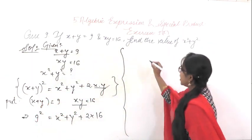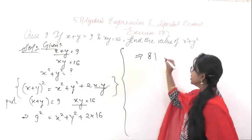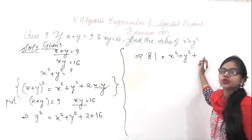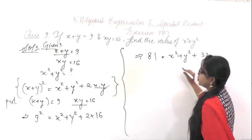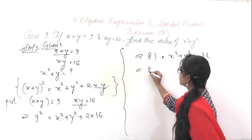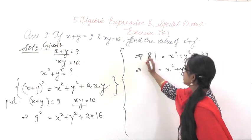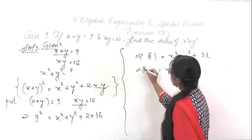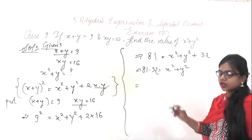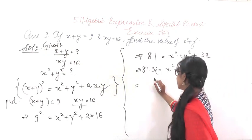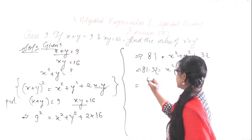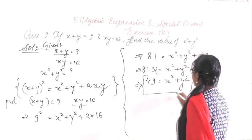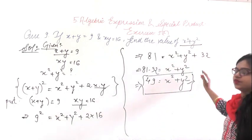9² is 81, so 81 = x² + y² + 32. Transfer 32 to the left-hand side: 81 - 32 = 49. So x² + y² = 49. This is the answer — we had to find the value of x² + y², which equals 49.